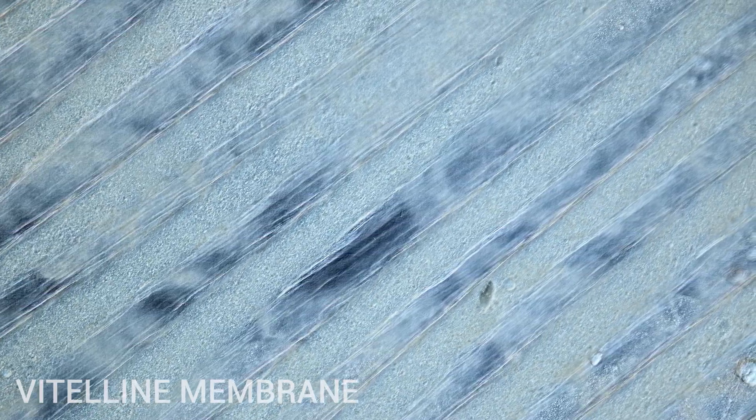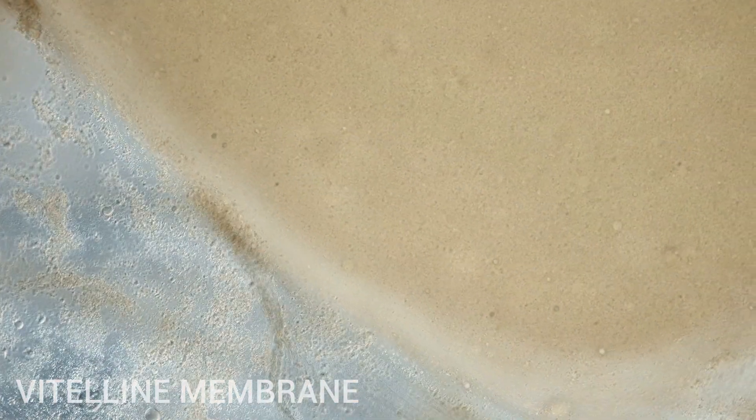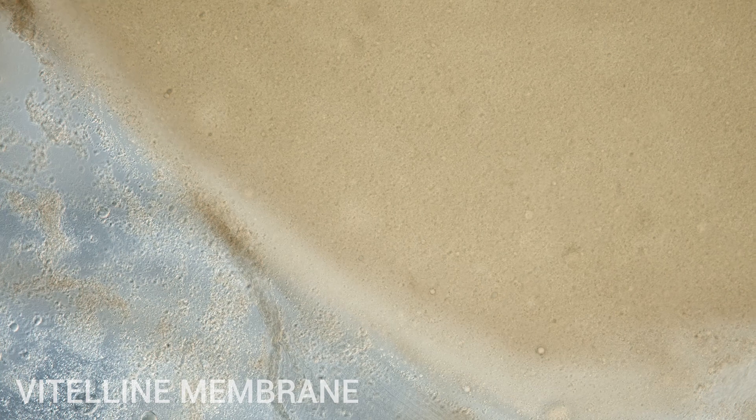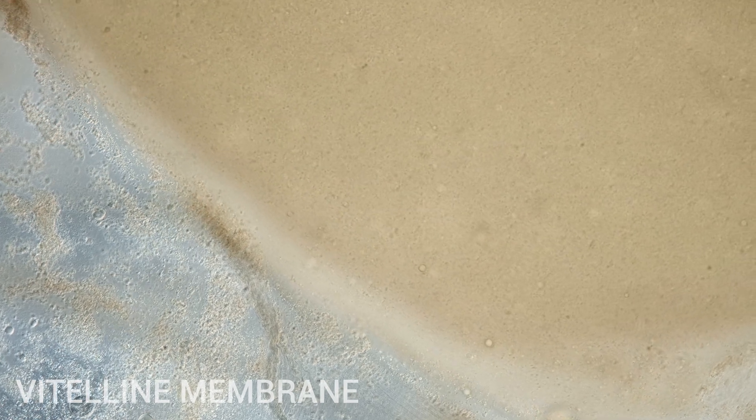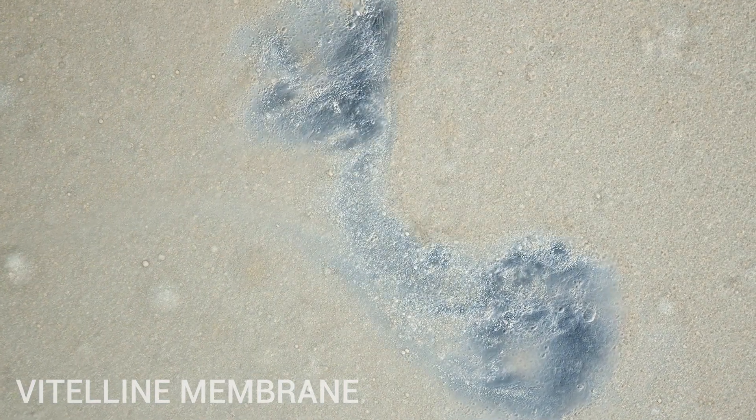Lastly, we have the vitelline membrane. The vitelline membrane is the extracellular protein membrane covering the entire yolk — or, putting it simply, a bag that holds the yolk's content. The vitelline membrane protects the yolk from breaking and spilling inside the shell. The mechanical properties of this membrane can be considered as a measure of egg freshness. If the membrane is weak and deteriorating, then you are probably eating an older egg.